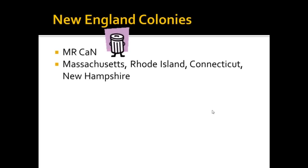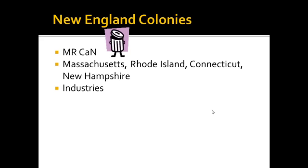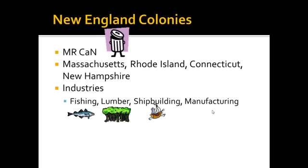They had very poor rocky soil in the New England colonies, so the industries that developed were based on the natural resources that were available to them. Fishing, lumber, and shipbuilding came from the lumber, and because they were able to build ships and trade with Europe, they were also able to be the first to institute manufacturing.